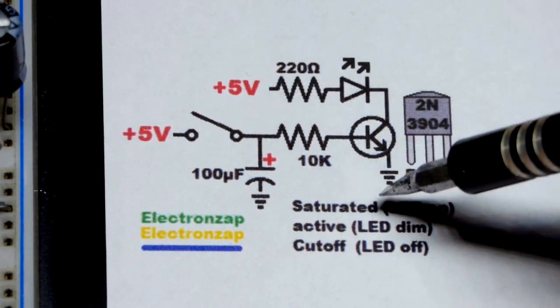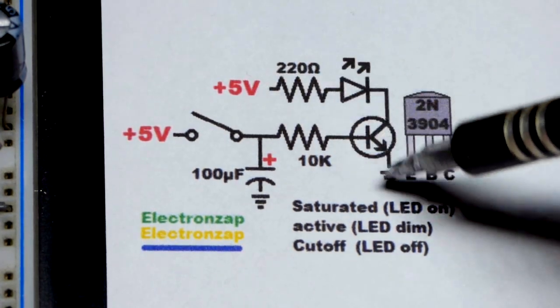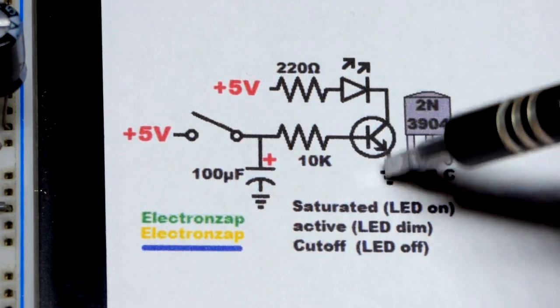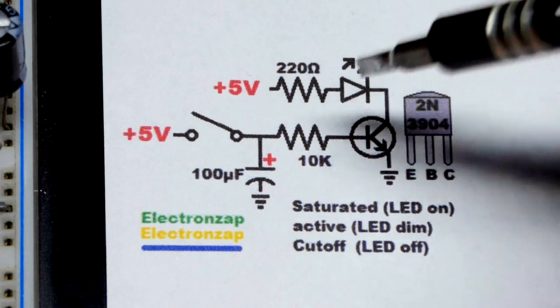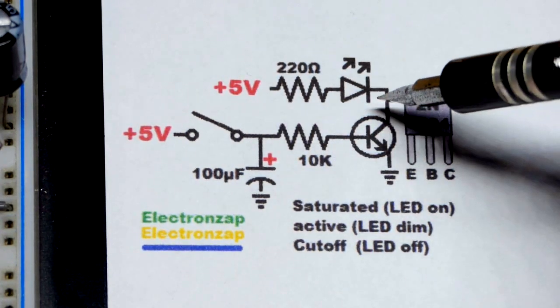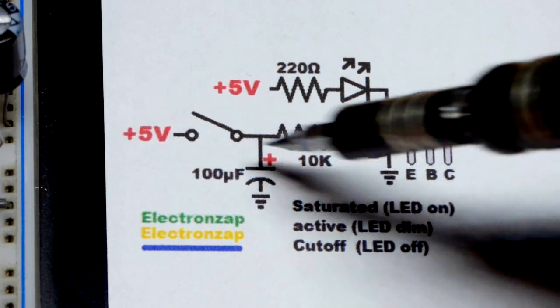The amount of current that flows through collector to emitter depends on how much current flows from base to emitter, but it's a mini multiple, maybe a hundred times. We just need about one one-hundredth of the current going from base to emitter that we want to go from collector to emitter.